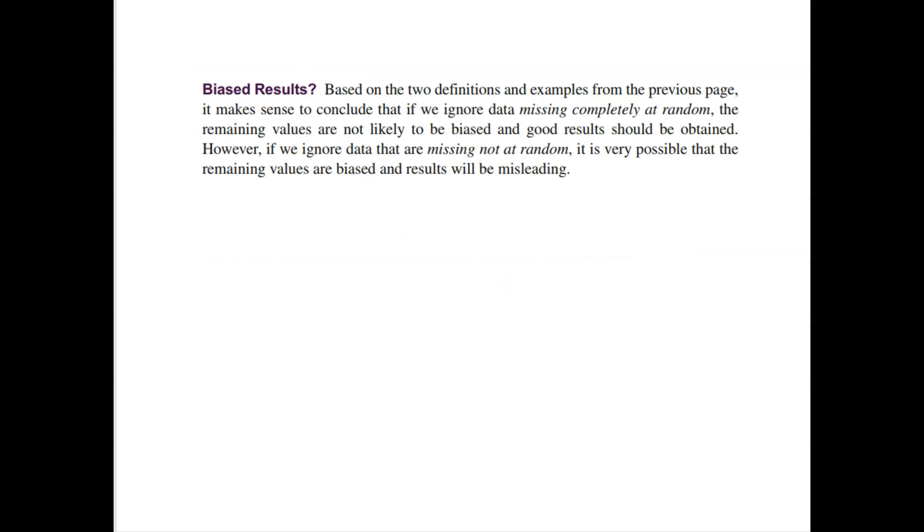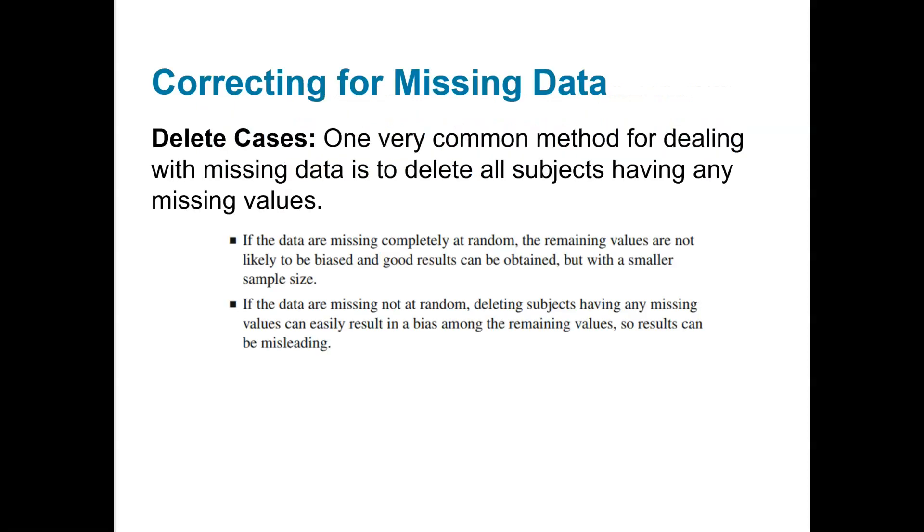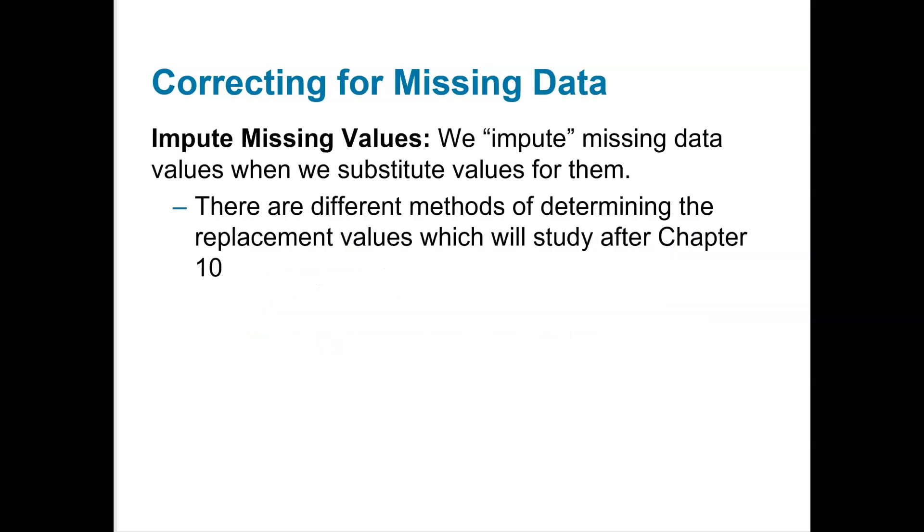So based on those two definitions, we can ignore data missing completely at random because it's not likely to be biased and we can still get good results. But if we ignore data that's missing not at random, it's possible that we might have biased results and we could use the results and we could be using them and they're misleading. If we don't have all the income, can we really make conclusions and decisions? So how can we correct that? We'll be talking about that in later chapters, but one common method is to delete all subjects having any missing values. So if they've got any missing values, then the entire subject or person, their values are deleted. Or we impute missing values, which is something we're going to talk about later. And that concludes section 1.2.